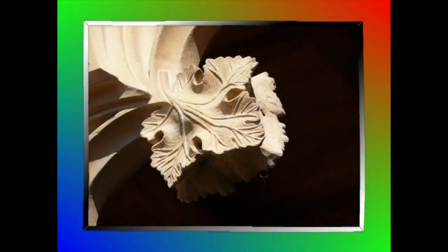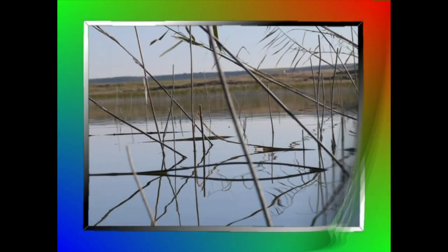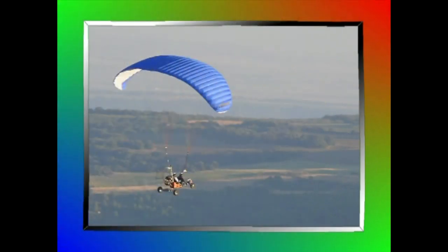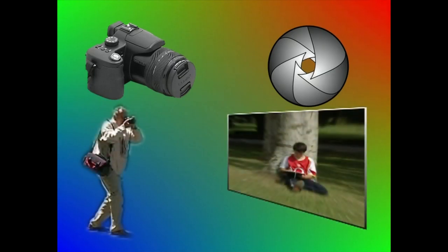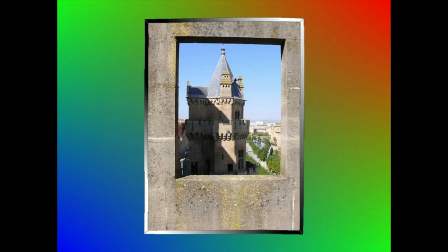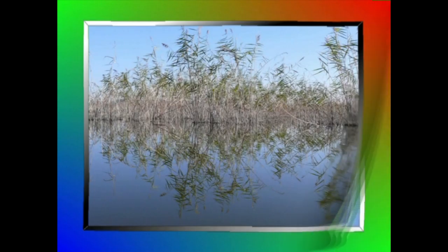Badakigu argazki baten eremuaren sakonera oso garrantzitsua dela ikusleari irudiko zer den garrantzitsua adierazteko. Diafragmaren irekiduraren arabera, jarri diogun objektiboaren arabera eta elementu nagusiarekiko distantziaren arabera, eremuaren sakonera aldatu egiten dela ere badakigu. Horregatik, angelu handiko objektiboz egindako argazkiek bakarrik eskaintzen zakete irudia oso-osorik fokaturik.